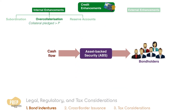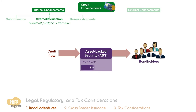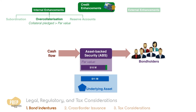Over-collateralization is the method in which the collateral pledged has a value greater than the par value of the debt issued; the additional collateral can be used to absorb losses. For example, if the principal amount of a bond issue is $10 million and the value of the collateral is $11 million, the amount of over-collateralization is $1 million. This amount changes over time — for example, if property was pledged as collateral, the amount of over-collateralization will fluctuate as a result of changing valuations of the property.